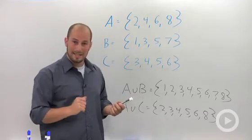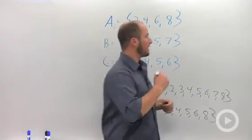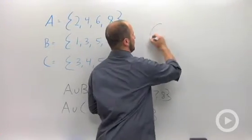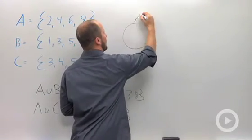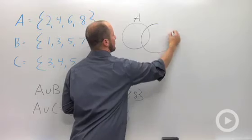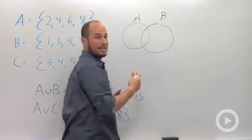One other way you may see this in your class is by Venn diagrams. If you have A being a big circle, B being a big circle,